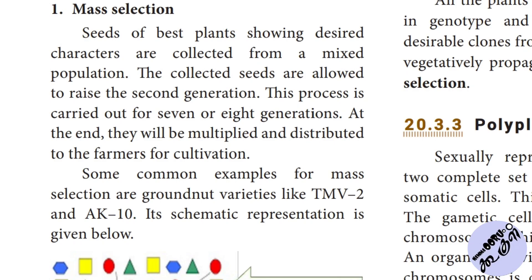The collected seeds are allowed to grow in the 2nd generation. This process is carried out for 7 or 8 generations. At the end, they are multiplied and distributed to farmers for cultivation. Some common examples of mass selection are groundnut varieties like TMV2 and AK10.